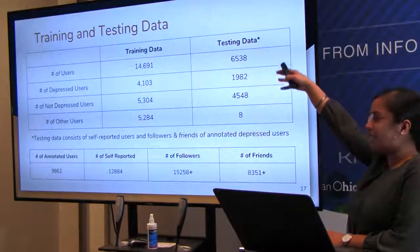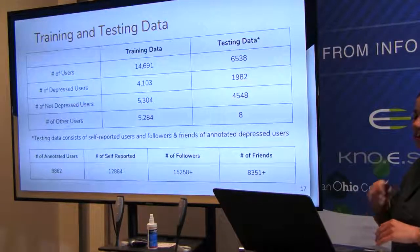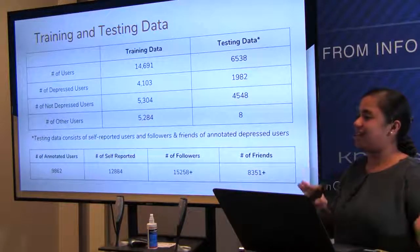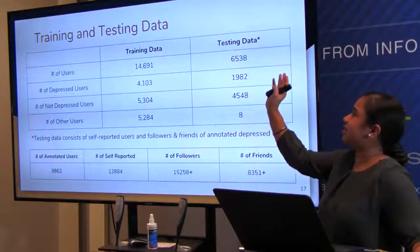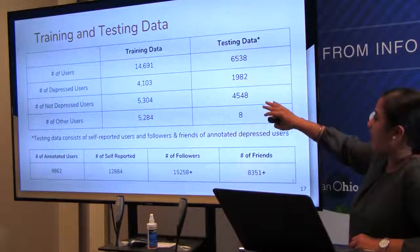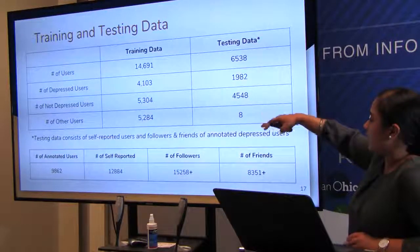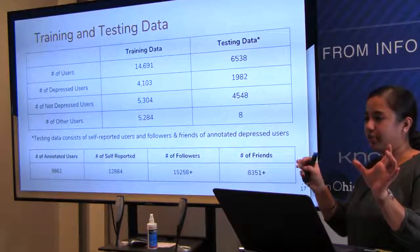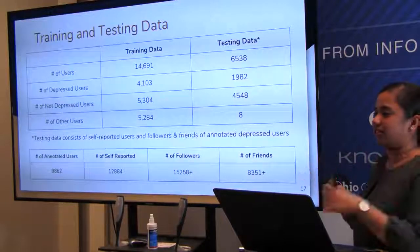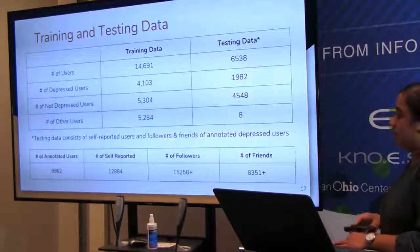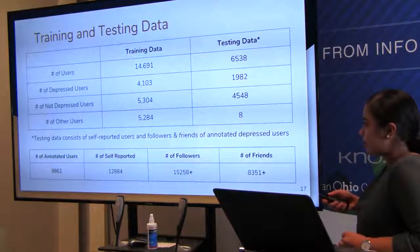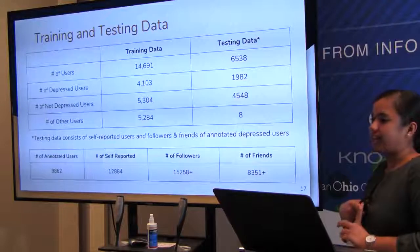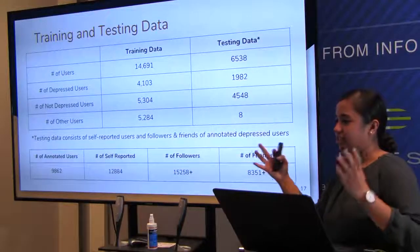Moving on to classifier results. From the testing data, a small subset was processed through the classifier: approximately 2,000 depressed users and 4,500 non-depressed users were identified. Users with zero description or tweet content are classified as 'others' due to insufficient information. The testing data consists of self-reported non-annotated users, collected followers, and friends — a subset of each combined for testing.